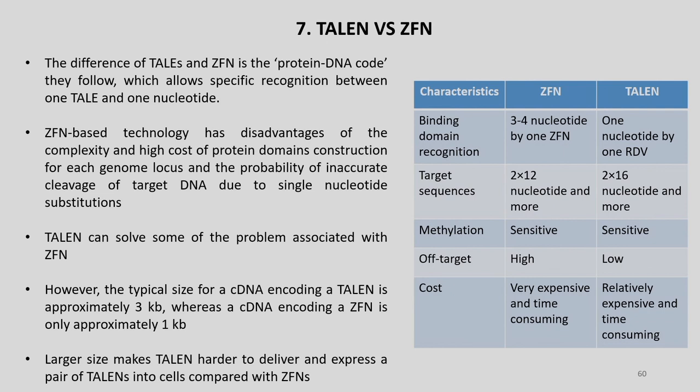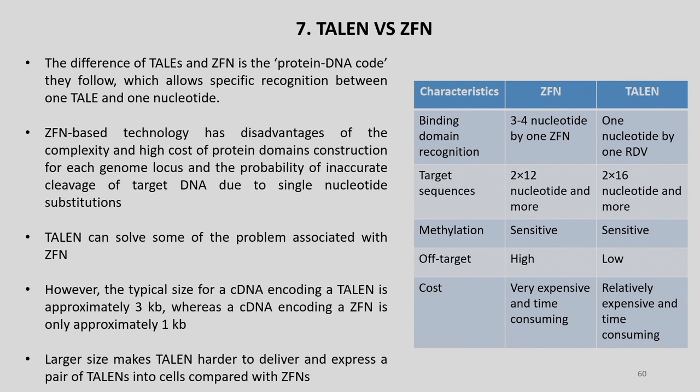TALEN and ZFN are mostly based on the FokI nuclease protein, which is fused to a DNA binding domain — zinc finger in the case of ZFN and TAL effectors in the case of TALEN. The difference between TALs and ZFN is the protein-DNA code they follow, which allows specific recognition between one TAL repeat and one nucleotide. ZFN-based technology has disadvantages of complexity and high cost of protein domain construction for each genome locus, and the probability of inaccurate cleavage of target DNA due to single nucleotide substitutions. TALEN can solve some of the problems associated with ZFN. However, the typical size for a cDNA encoding a TALEN is approximately 3 kb whereas a cDNA encoding a ZFN is only approximately 1 kb, making TALEN harder to deliver.